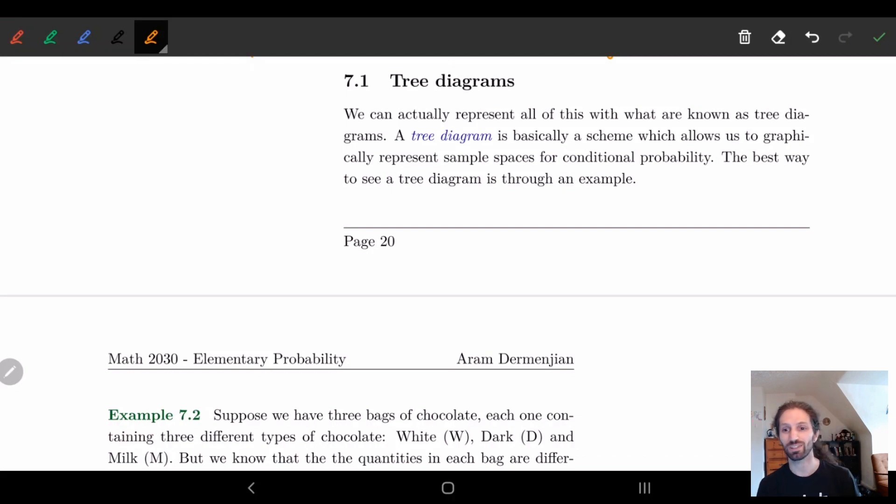Hi, welcome to this video. We're going to be talking about tree diagrams. The idea here is to take this concept of conditional probability and draw it out so we understand what's happening. It's a way to represent probability so we better understand what's going on. Let's look at an example because examples are the best way to view these things.